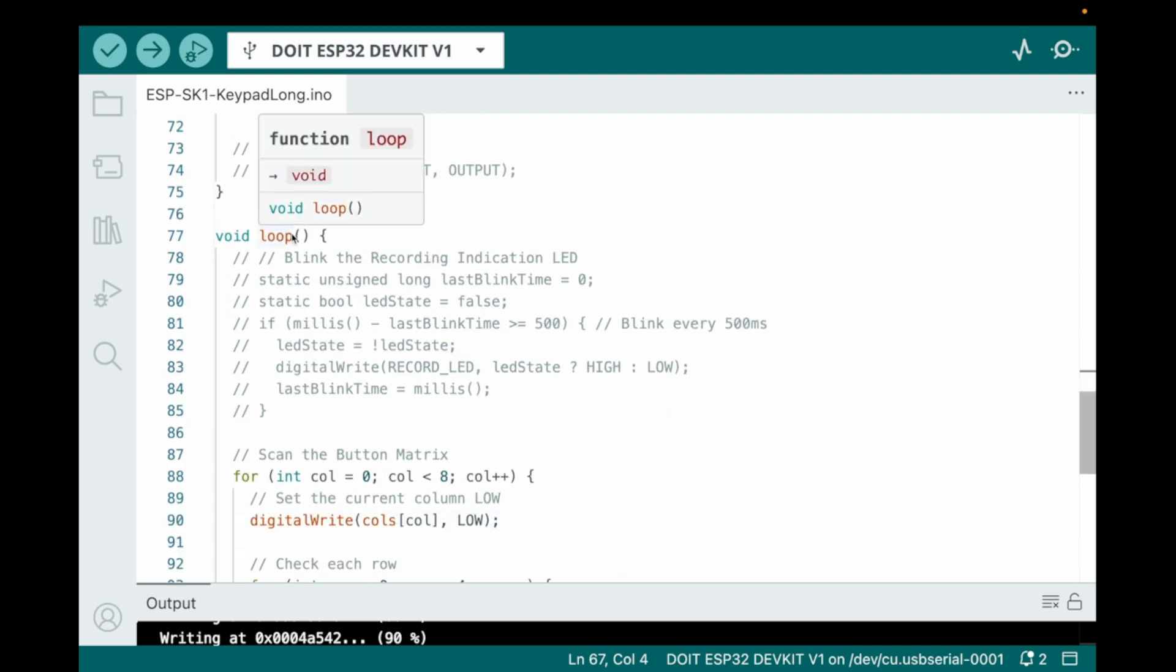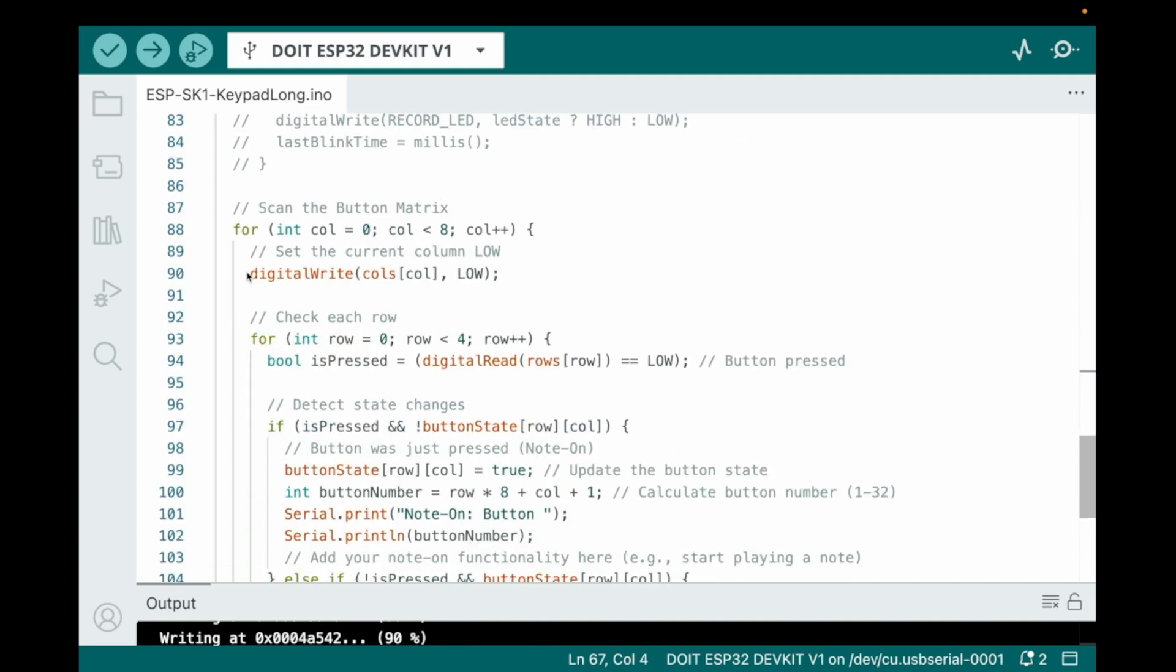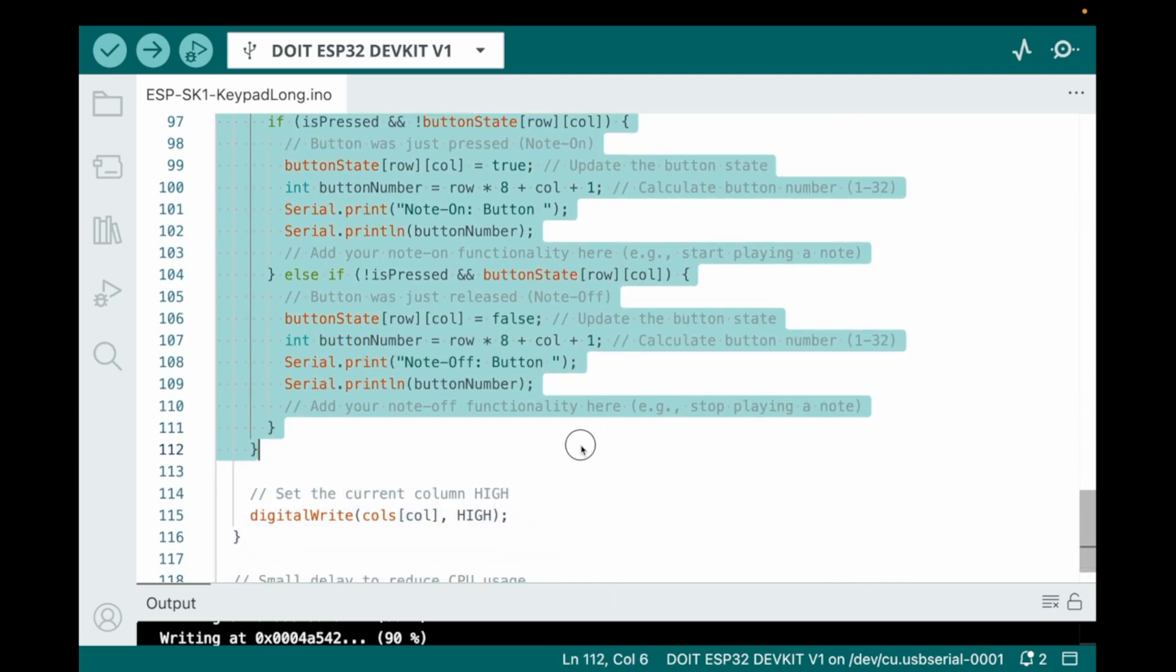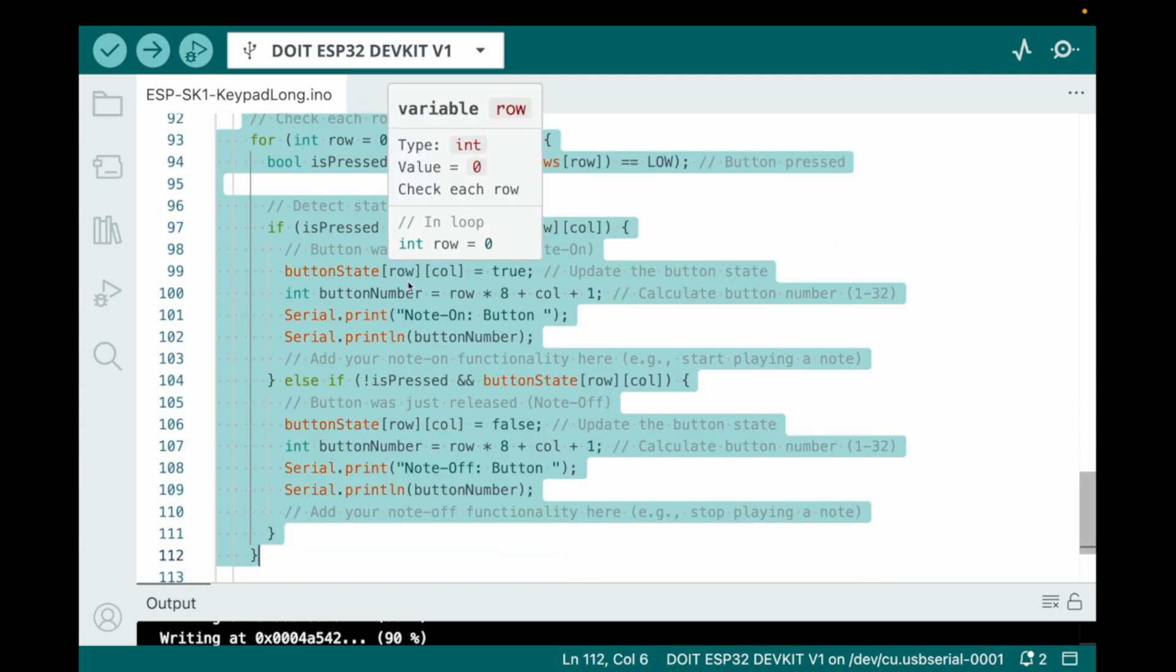And then we keep going, and now we get to the fun part, which is the actual loop function where we actually get to do the keypad scanning. First things first is we have our for loop here. What we're doing here is we're looping through each column, setting it low one at a time to activate the column. Then, we've got this whole section right here, this for loop here. What that does is we're checking all the rows. And if a row reads low while its column is low, that means that the button at that row and column is being pressed.